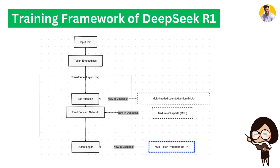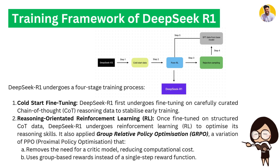DeepSeek R1 goes through a four-stage training process. First, it undergoes fine-tuning on carefully curated chain-of-thought reasoning data to stabilize early training. Once fine-tuned, it undergoes reinforcement learning to optimize reasoning skills using Group Relative Policy Optimization (GRPO), which is part of proximal policy optimization. GRPO removes the need for a critic model, reducing computational cost, and uses a group-based reward instead of a single-step reward function.